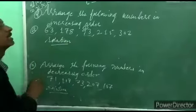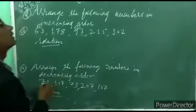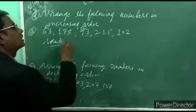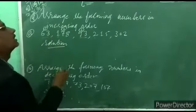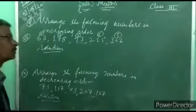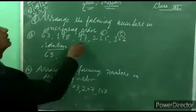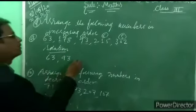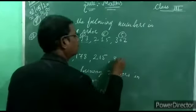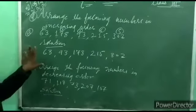From the three 3-digit numbers — 178, 215, 302 — compare their hundreds place: 1, 2, and 3. The smallest is 1, so 178 is third. The fourth is 215, and the last is 302. So the answer in increasing order is: 63, 93, 178, 215, 302. This arrangement is in increasing order, from smallest to biggest.